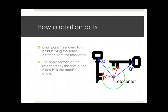Again, this slide repeats some of what I said already. Each point P is moved to a point P prime, the same distance from the rotocenter. The angle formed at the rotocenter by the lines out to P and P prime is the specified angle.